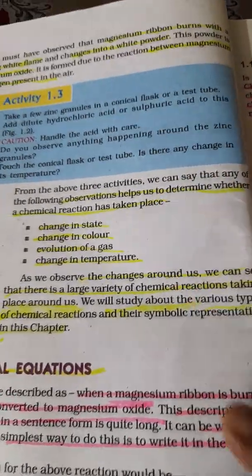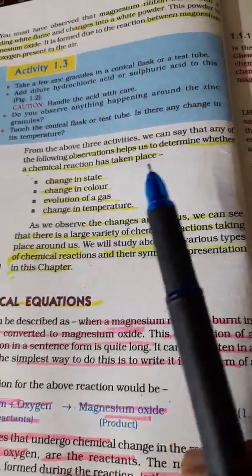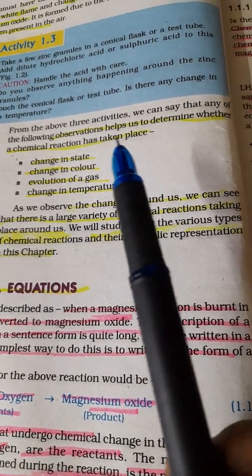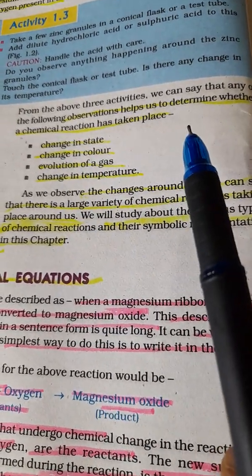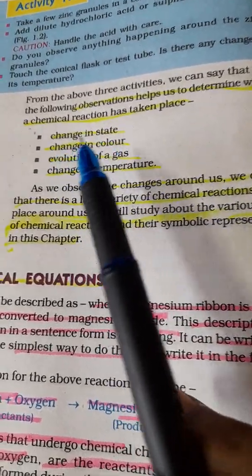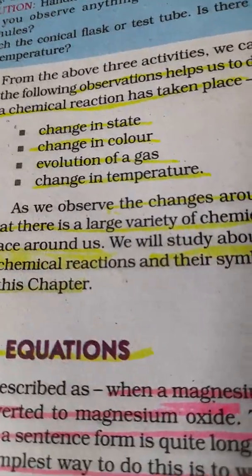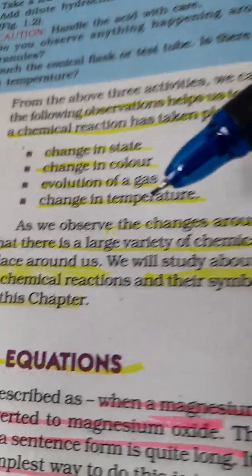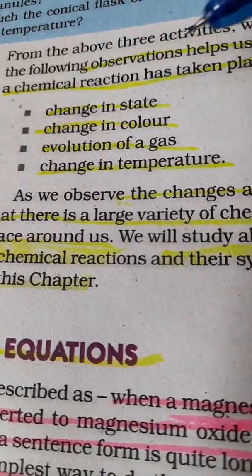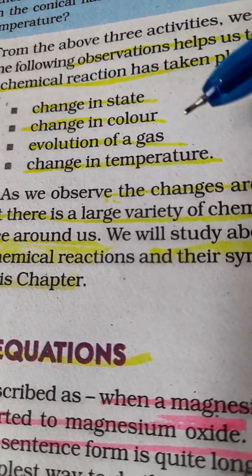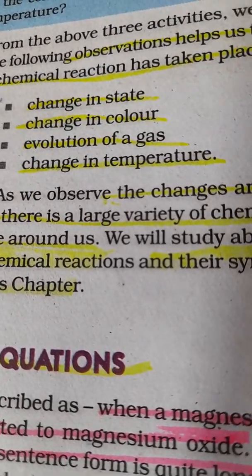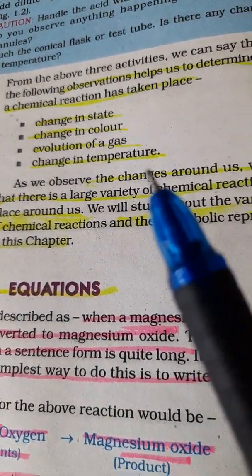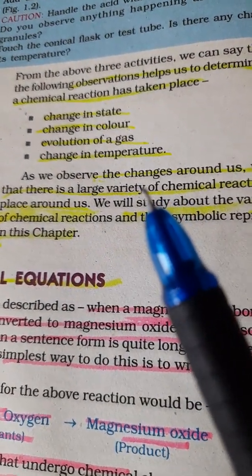From the activities you can read in the NCERT textbook, you see the following observations which help us decide whether a chemical reaction has taken place. First is change in state, change in color, evolution of a gas, and change in temperature. These four observations will help us find out if a chemical reaction has taken place.